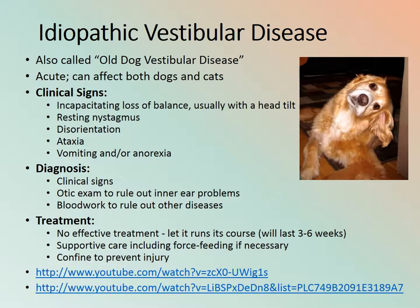It can affect both cats and dogs. Clinical signs are incapacitating loss of balance, usually with a head tilt and resting nystagmus — you're going to see their eyes jiggling back and forth when they're just trying to look straight. Disorientation, ataxia, vomiting, and/or anorexia.